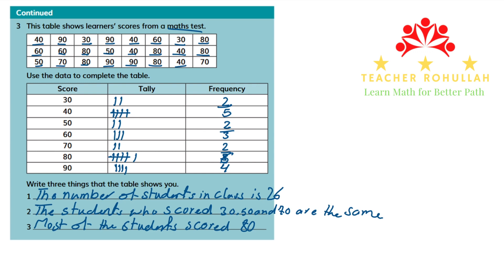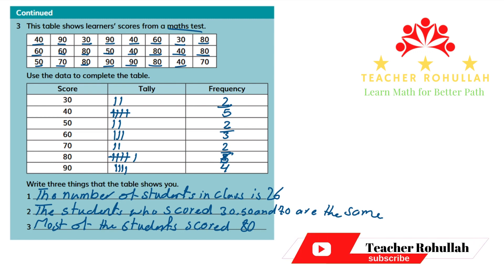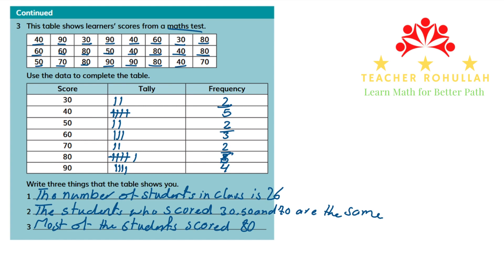This is all about the last part of Unit 2 of Cambridge Primary Mathematics Learner's Book 3. I hope it helps you learn how to use the information to make a tally chart and a frequency table. Please make sure to subscribe to my channel, like the video, and share it with your friends, classmates, and students. Have a nice time and thank you so much.